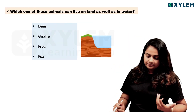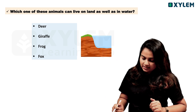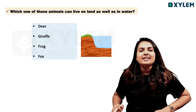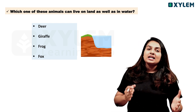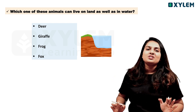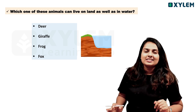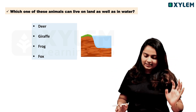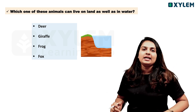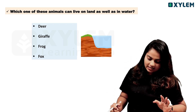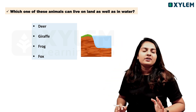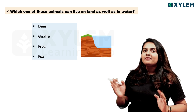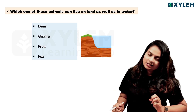Next question: Which one of these animals can live on land as well as in water? Option 1 is deer, then giraffe, frog, and we consider the animals living in the world.